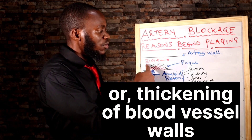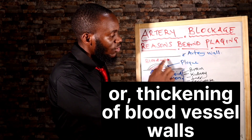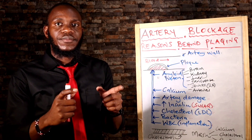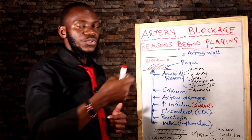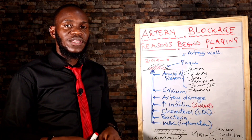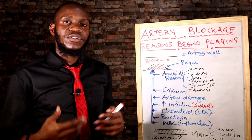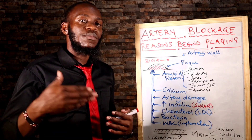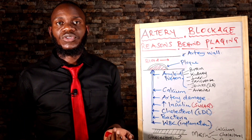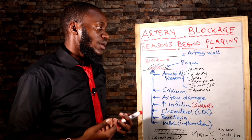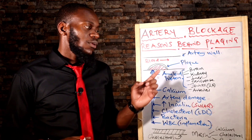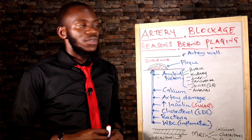Once blood cells start accumulating in your blood vessel, it blocks it. Once it blocks it, the organs that these blood vessels supply become necrotic — they start to rot — because there's no nutrients, there's no oxygen going to these organs, so they start to die. That's the same concept with the brain. Once blood vessels that supply the brain are blocked by this plaque, there is no supply of oxygen or nutrients like glucose and ketone bodies to the brain, and therefore brain cells start to die, which can cause a stroke or paralysis. So those of you who have had a stroke can now understand where it came from.